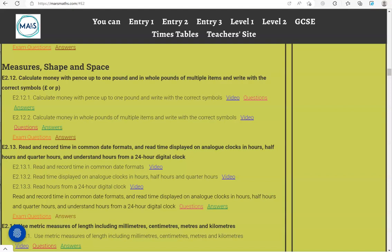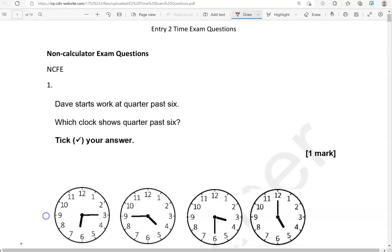In this video, we'll go through exam questions that cover the criteria: read and record time in common date formats, read time displayed on analog clocks in hours, half-hours and quarter-hours, and understand hours from a 24-hour digital clock. You can locate the questions on the mathsmates.com website under Entry 2. The questions come from different exam boards. We'll start with the non-calculator questions and then we'll move to the calculator questions.